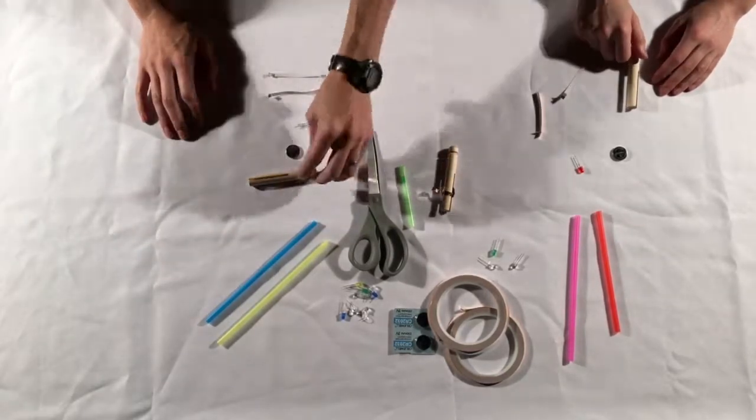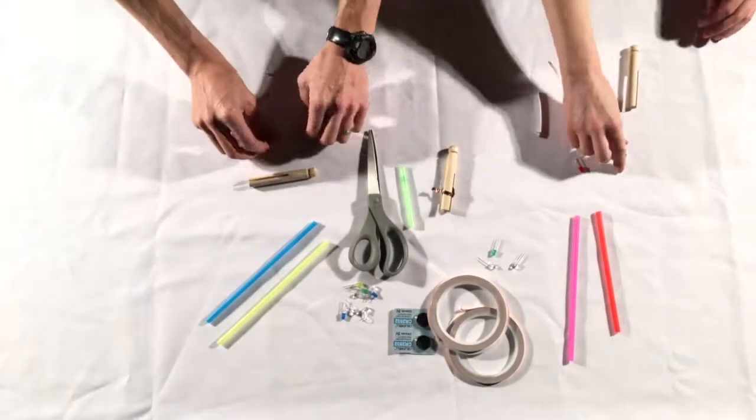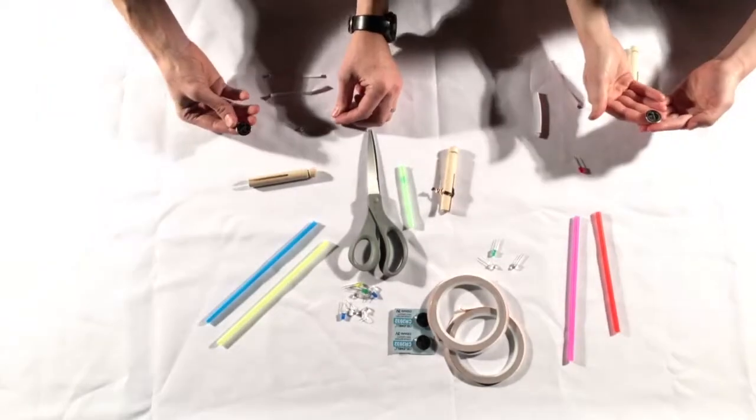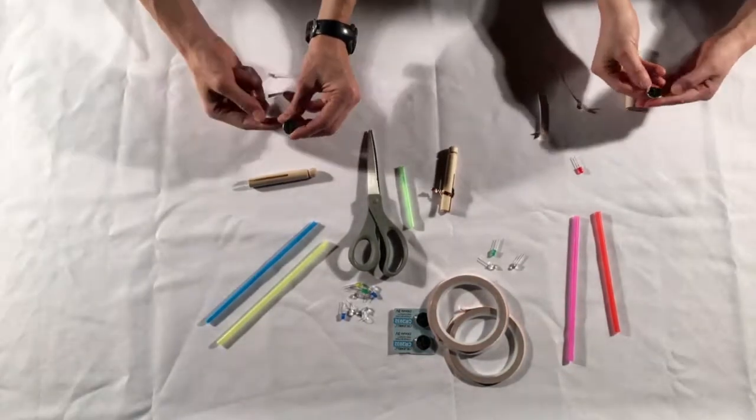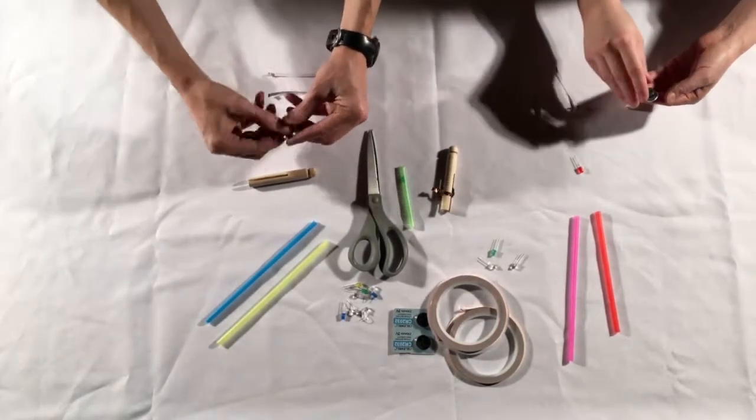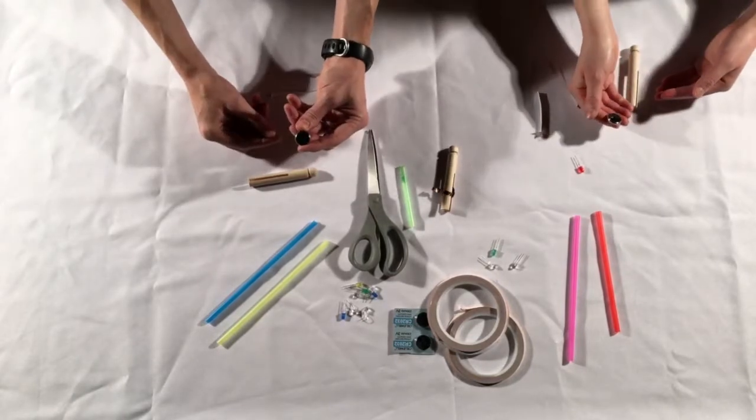To start off with, we're going to identify the positive and the negative side of our battery and the LED. Usually the larger flat side of the battery is going to be the plus side, and the flip side, the little smaller underneath the cap, is going to be the negative side.